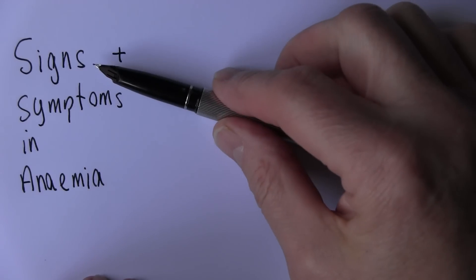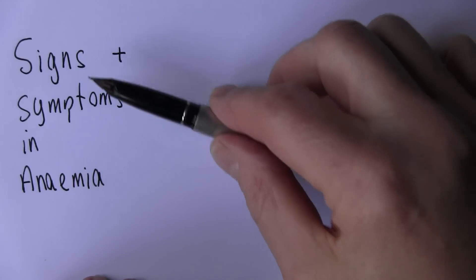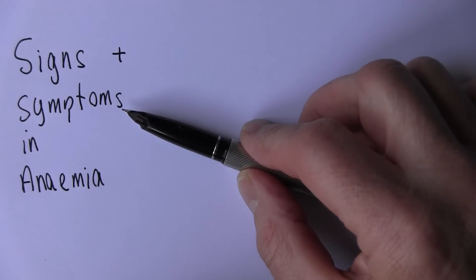Next we want to think about the signs and symptoms in anemia. A sign is something that we detect with our senses. A symptom is something the patient reports to us.